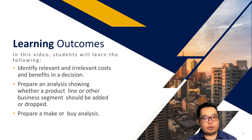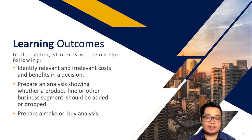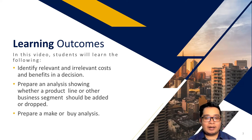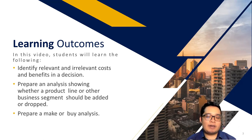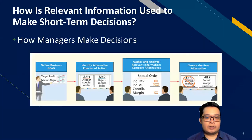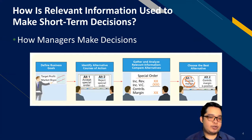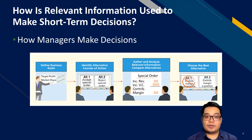Basically, for the next two weeks, we'll be focusing on identifying which items are relevant and irrelevant in a decision and applying them in different contexts of a business. Before we proceed, we have to define how relevant information is used to make short-term decisions of the company. First, we need to discuss how managers make decisions.